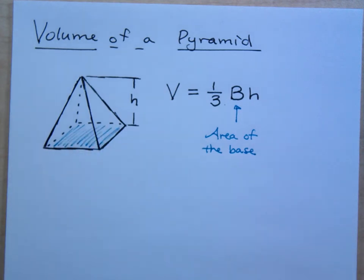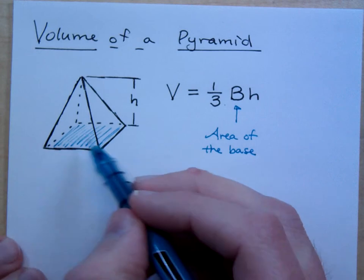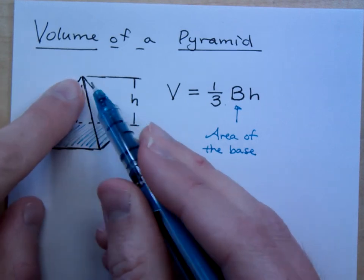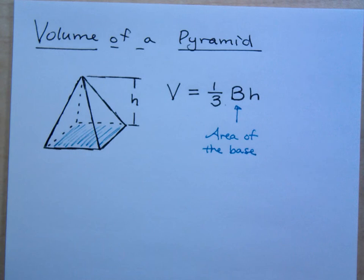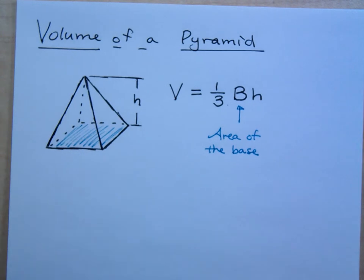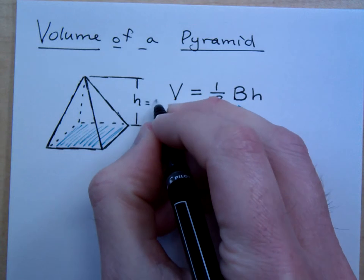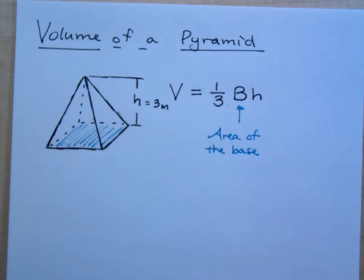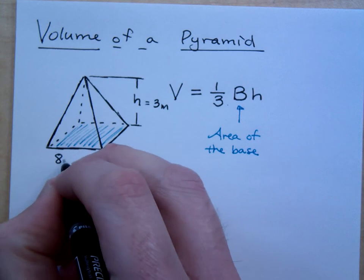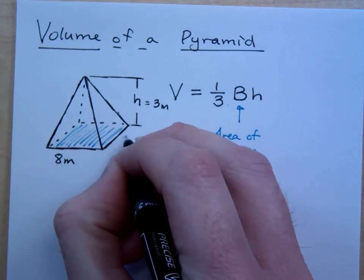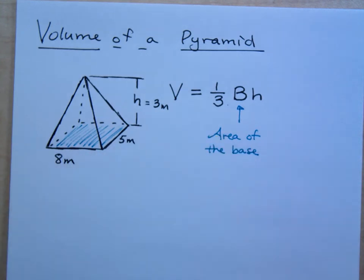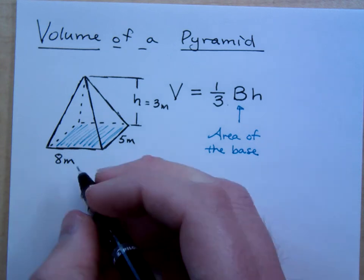Now, it doesn't have to be a square base. It could be a rectangular base. It could be a circular base. It doesn't matter. As long as this shape right here is maintained as you go up to the top, where it's still proportional. So, if I were to say this guy right here has a height of 3 meters, and the base measures 8 meters by 5 meters,